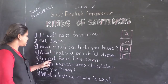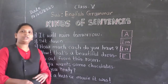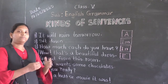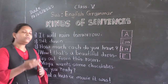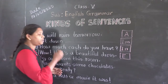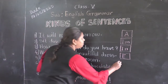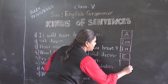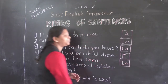Now see the fifth sentence: 'Go out from this room.' 'Go out' means I am giving you an instruction, so which type of sentence is this? This is an imperative sentence, so we will write here IN. Okay?